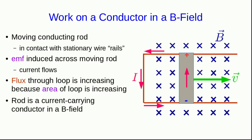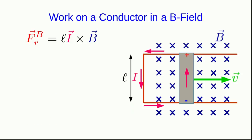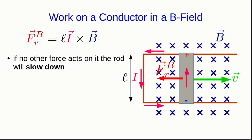Notice that the rod is a current-carrying conductor in a magnetic field, which tells us there's going to be a magnetic force acting on it. You can use the right-hand rule to find that the magnetic force on the rod is opposite its direction of motion. So if no other forces act on this rod, it's going to slow down.